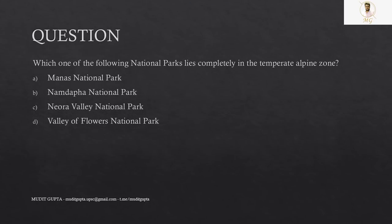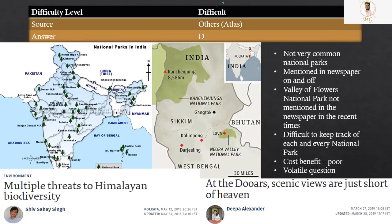So this was one volatile question. Another question, which of the following national parks lie completely in the temperate Alpine zone? Which park, you know, you should have an idea which lies in tropical zone, subtropical zone, above tropic of cancer, below tropic of cancer, beyond 35 degrees, in temperate zone like that. So again,